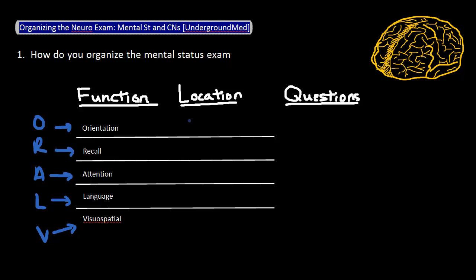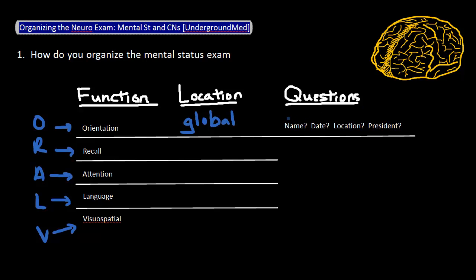Orientation tests global brain function, and I like to assess this by asking the patient the following four questions: What is your name? What is the date? Where are you? And who is the current president?